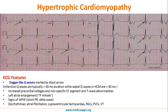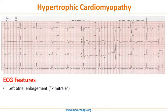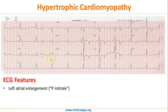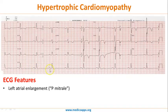Let's look at another ECG in hypertrophic cardiomyopathy. Again, one thing you can see is that the QRS voltage is very high. Second, you can see left atrial enlargement. If you look at the P wave in the rhythm strip to understand its morphology, you see a typical P mitrale kind of P wave. So this again was an ECG from hypertrophic cardiomyopathy.